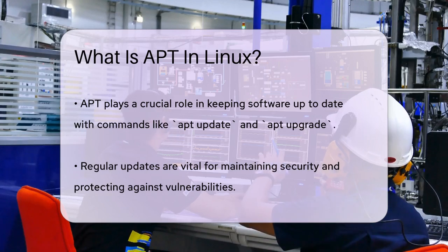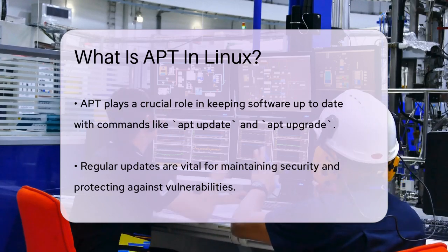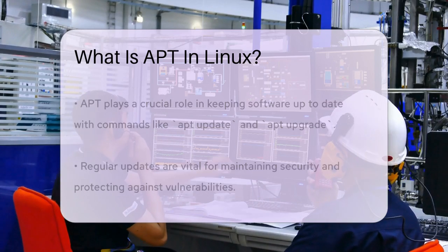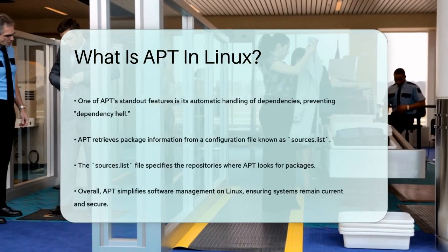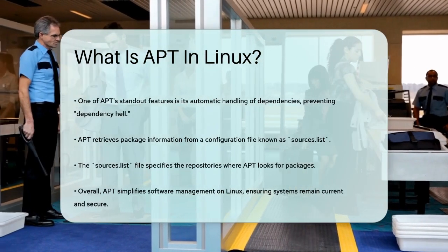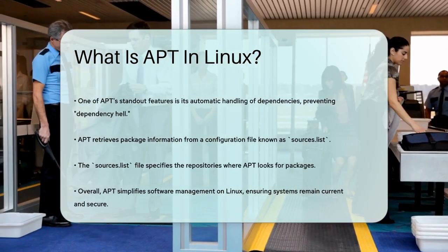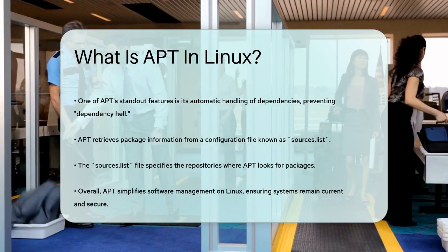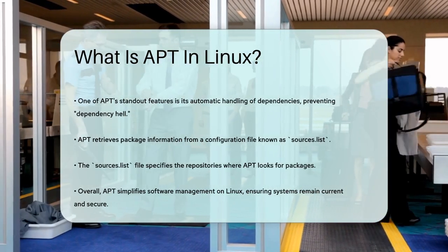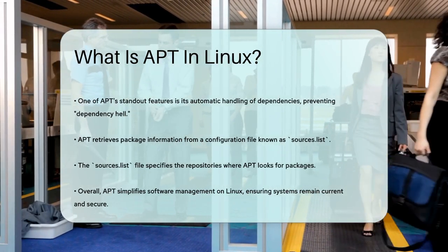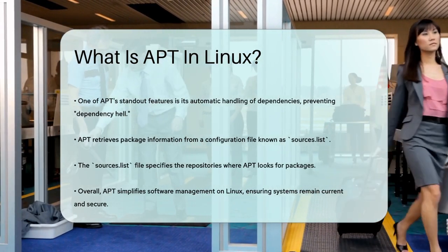APT works by retrieving package information from a configuration file called sources.list, which lists the repositories where the packages are stored. This file tells APT where to look for the packages you want to install.